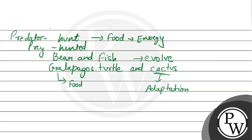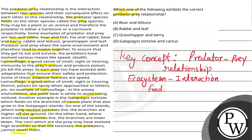Now, in the light of this concept, let's answer the question: which predator-prey relationship is correct? Bear and lettuce? No, because bear and lettuce do not depend on each other in that way. Rabbit and leaf? No, because rabbit depends on lettuce. Grasshopper and berry? Also wrong, because grasshopper depends on leaf for its food. So option D — Galapagos tortoise and cactus — is the correct answer, as they are in a predator-prey relationship.